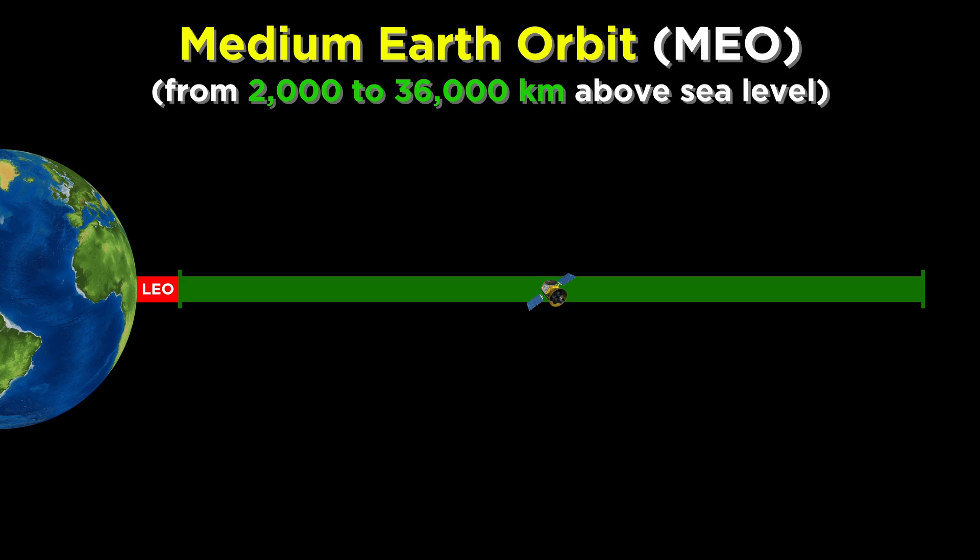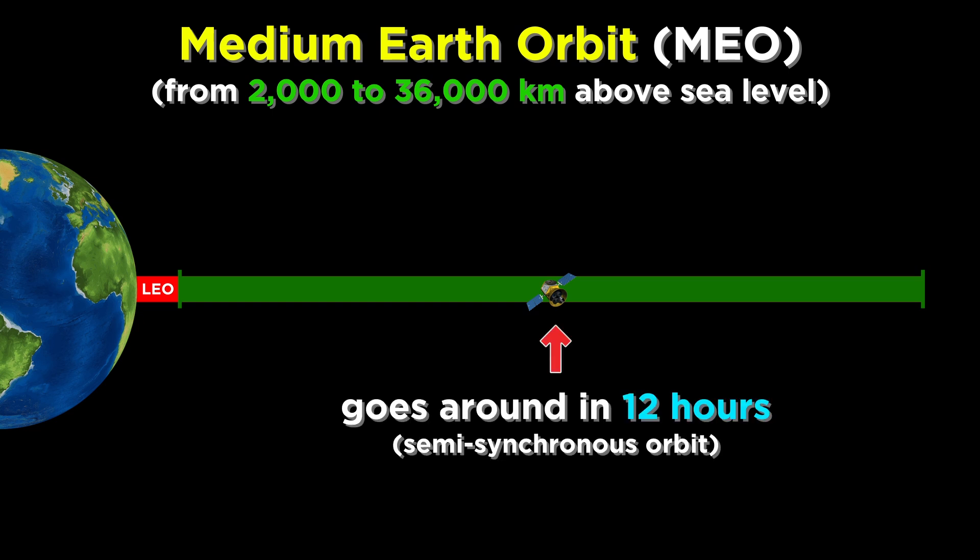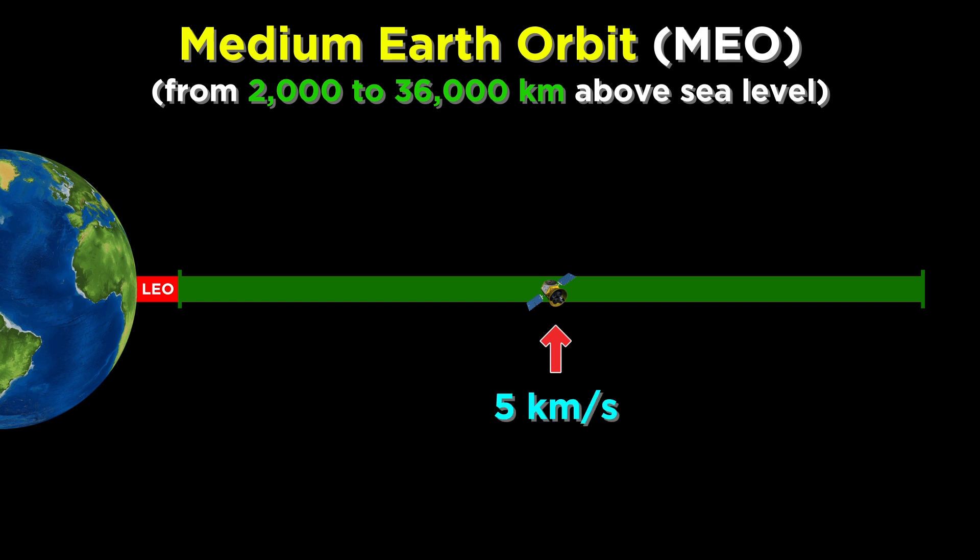If we go a little higher, there is medium Earth orbit. This contains objects between 2,000 and about 36,000 kilometers above the Earth. Objects right in the middle of this region go around the Earth in about 12 hours, a little more slowly than their low Earth counterparts, closer to five or so kilometers per second.